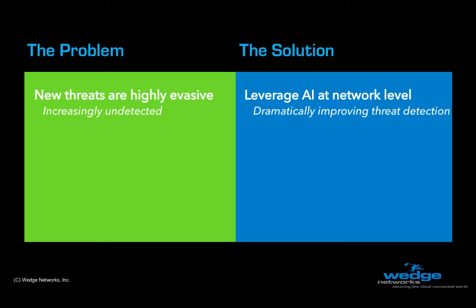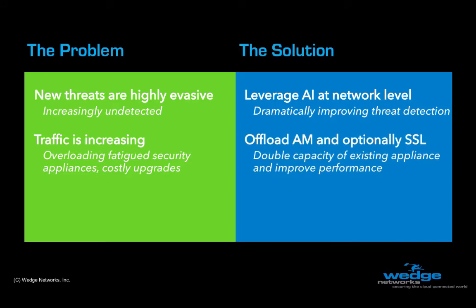Another key problem is the fact that continued growth in overall traffic is overloading many existing security appliances, triggering costly capital-intensive upgrades. Wedge AMB solves this by offloading anti-malware and optionally SSL inspection from next-gen firewalls, UTMs, and IPSs. Doing so can often double the supported throughput of these systems and defer the need for costly upgrades.